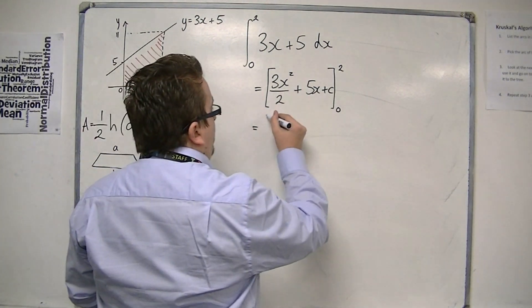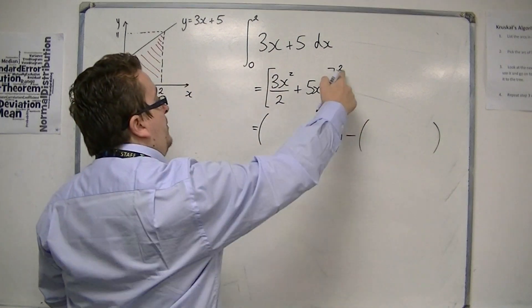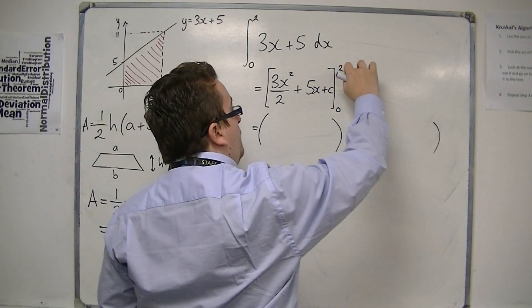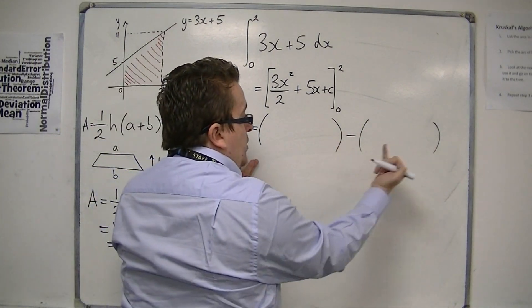The next step is substituting in the two values. So we substitute in 2 first. You always substitute in the top one first, and then followed by the bottom one. And you can see that we're going to subtract one from the other.